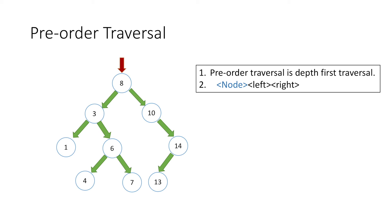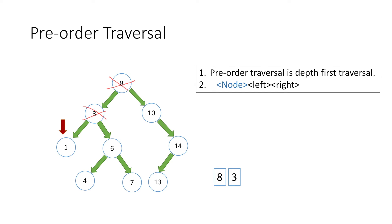We start with the root node and since we are at a node, we print its value — that is 8 — and strike it off as traversed. Looking at the rule, we now move to its left child, the node containing value 3. Again we are at a node, so we print 3 and strike it off. Looking at our rule we need to move left, so we move to node 1 and print its value, striking it off as traversed.